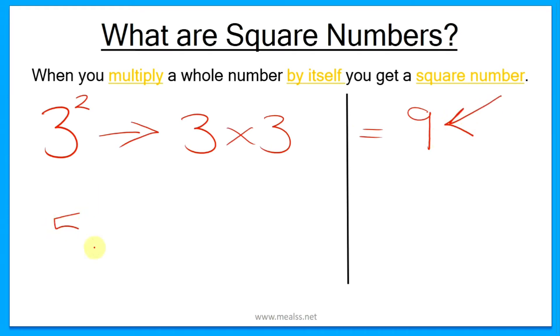Another example is 5. So 5 squared is the same as 5 multiplied by 5, which equals 25. Therefore, 25 is also a square number.